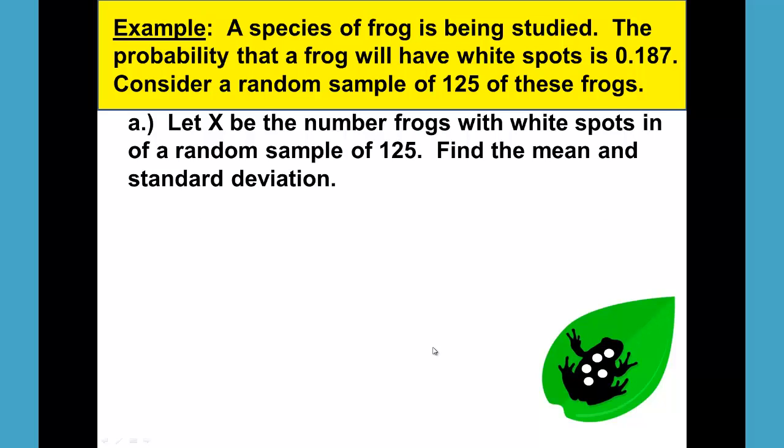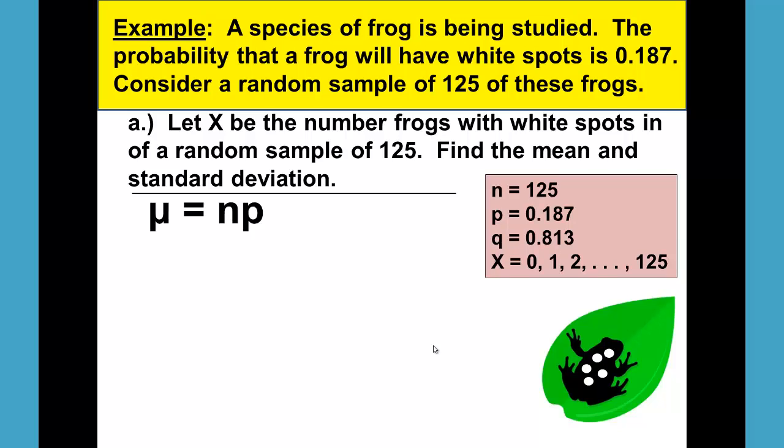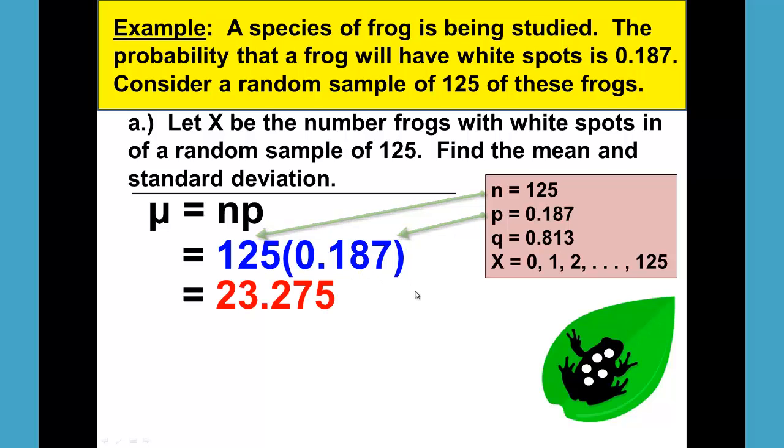Part A asks us to find the mean and standard deviation. Our mean formula is mu equals n times p. We simply take 125 and multiply by the probability of 0.187. That gives us 23.375. This is our mean.